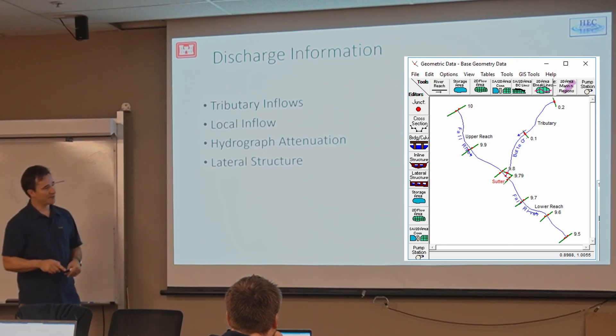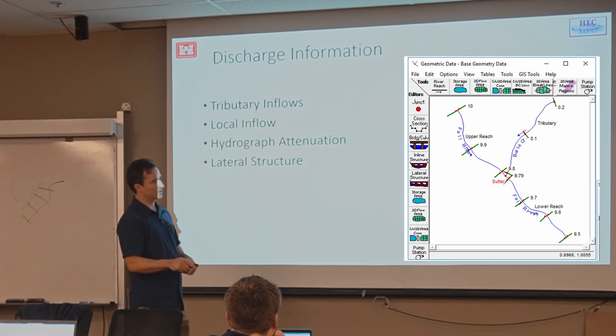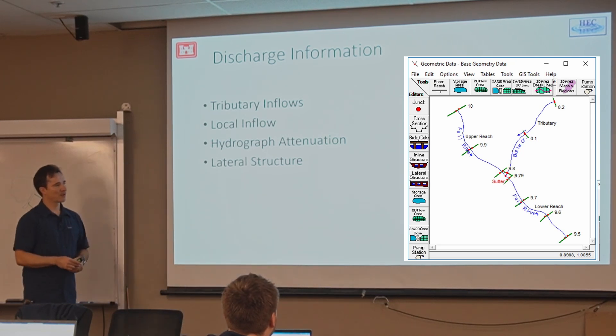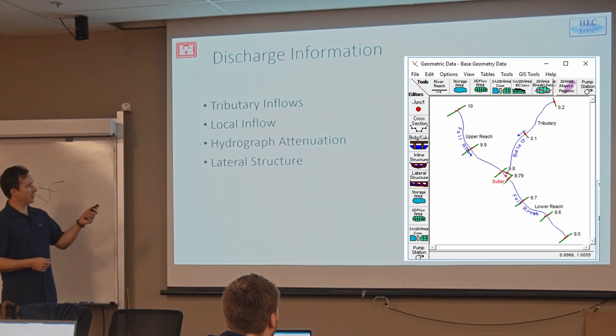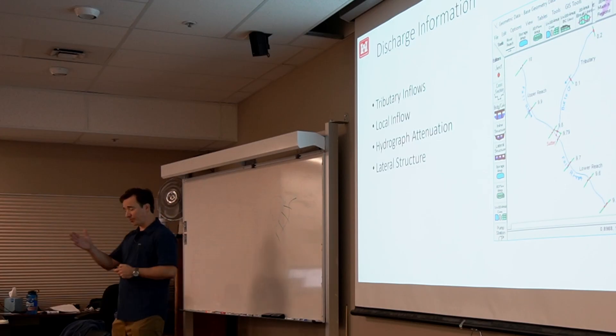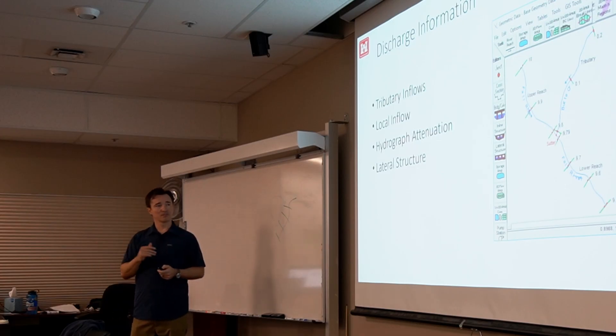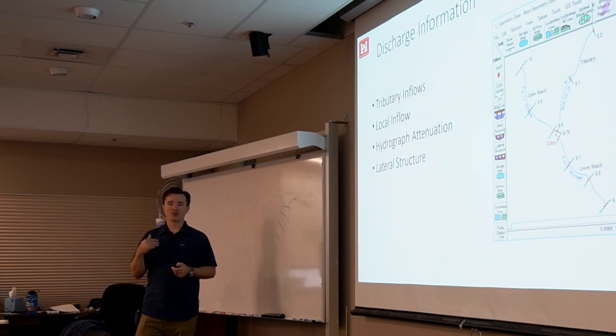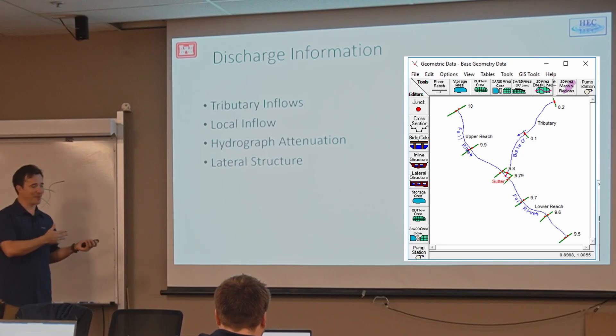If you're modeling an unsteady event, your flow hydrograph is going to attenuate. And it looks like somebody was talking about that yesterday already here. And the way you account for that is by changing the flows at different points along your model, different cross-sections. And that's how you do it. You can put lateral structures in your model and take the flow out of your system or not take the flow out. And I'll talk about that in a little bit. And just compute those flows at the lateral structures. And those can be connected to a storage area, another cross-section, or even nothing. They can go out of the system.